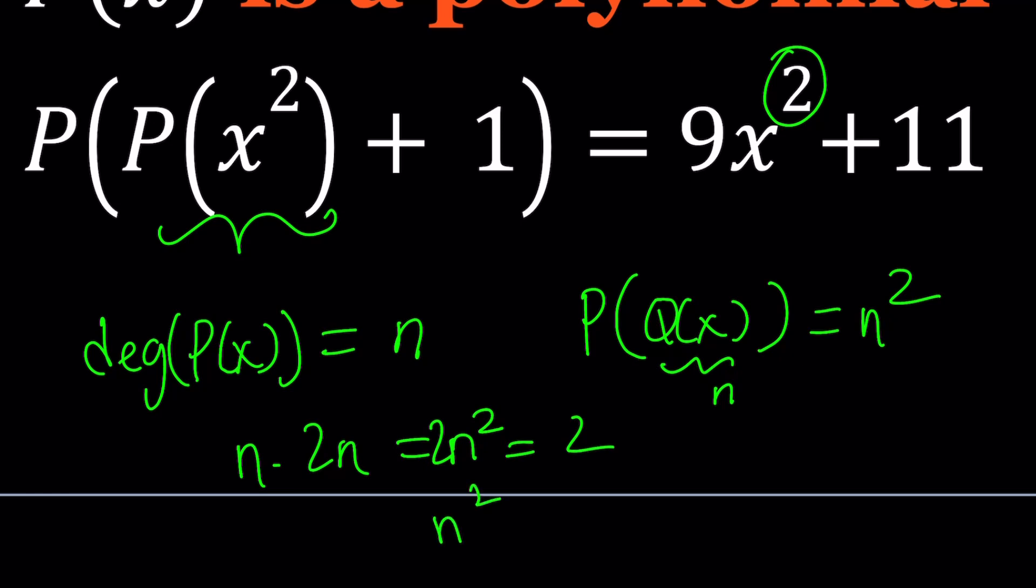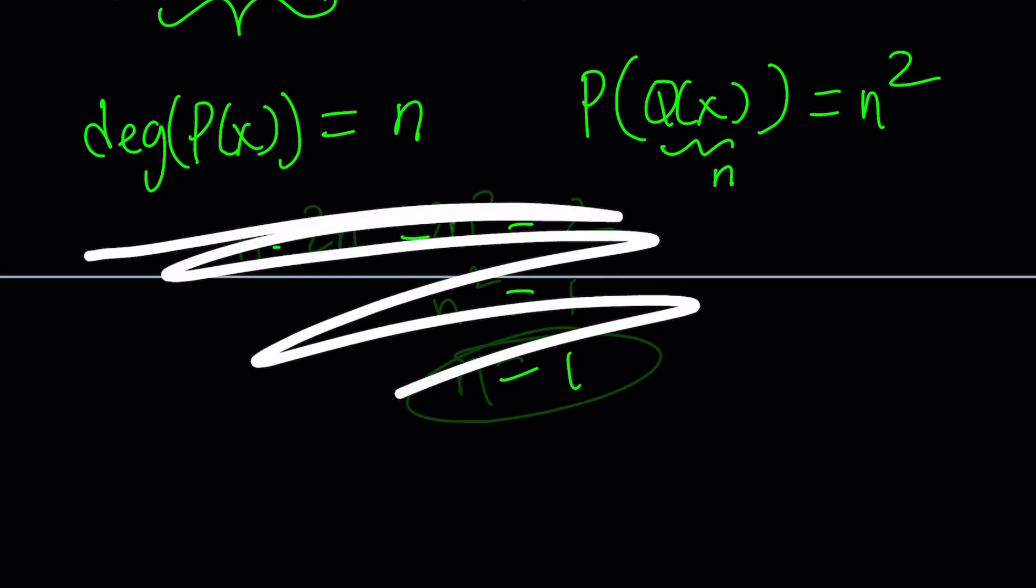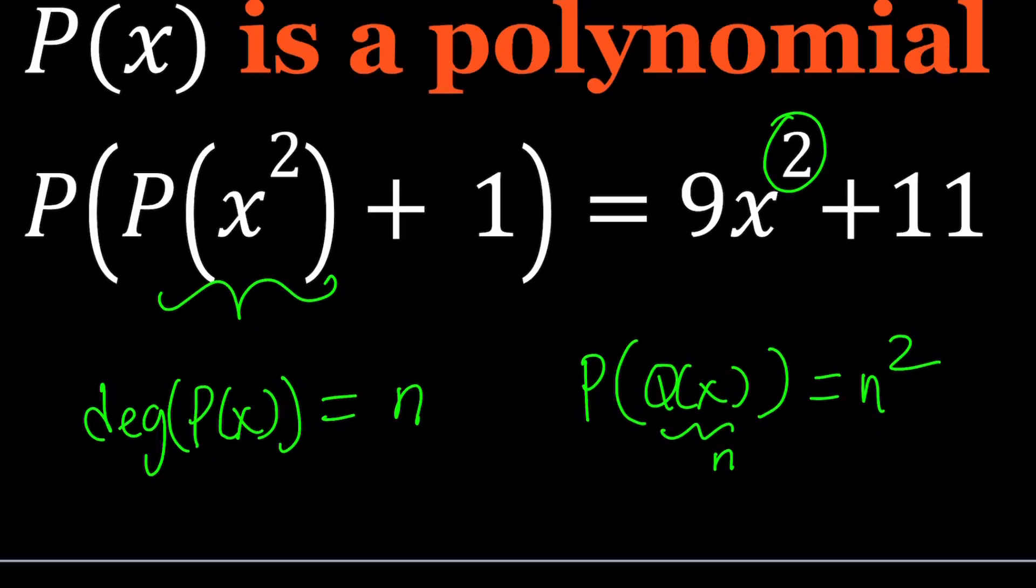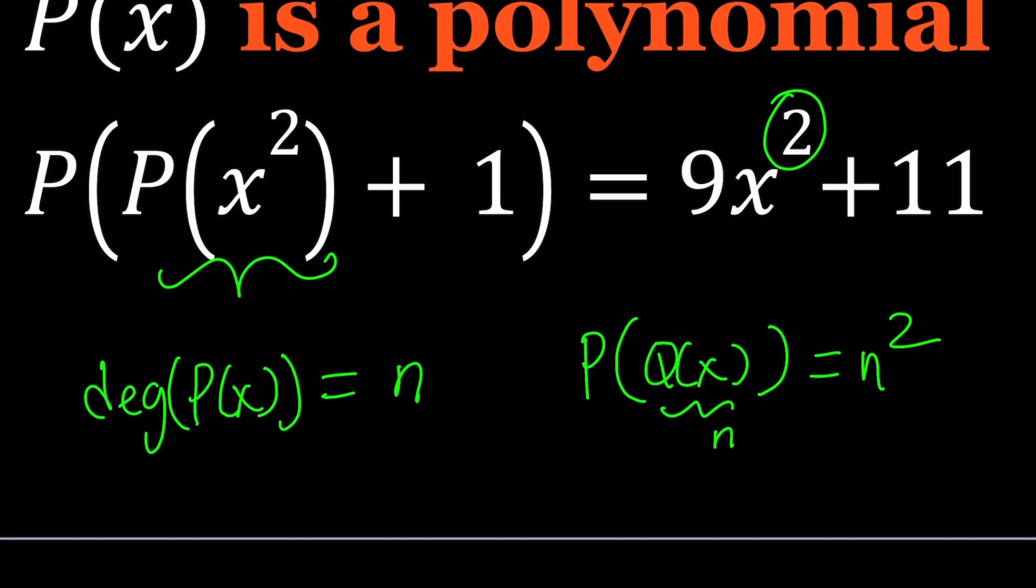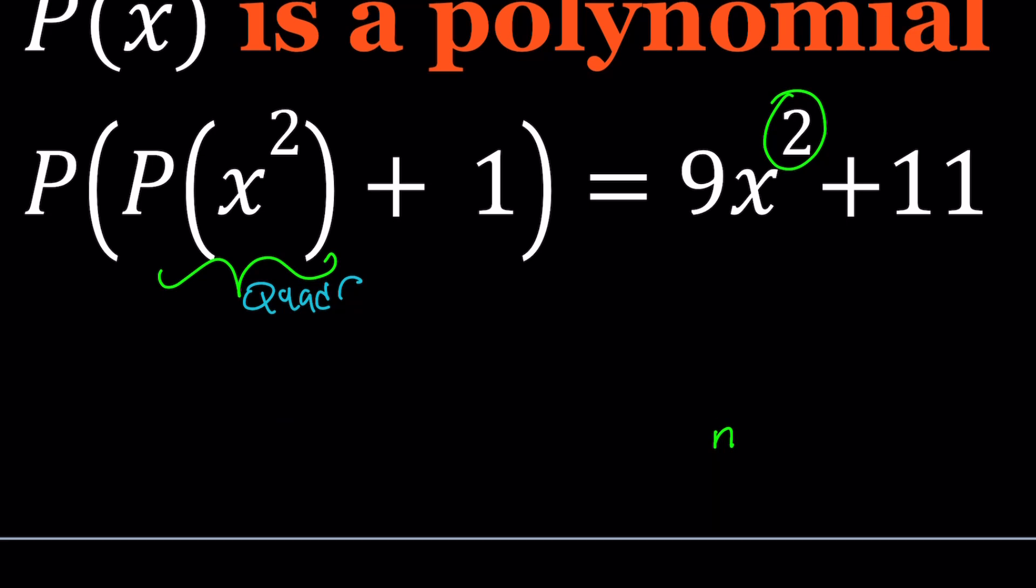So n squared is 1 since degree cannot be negative. n has to be 1. To keep a long story short, I know I kept it too long, P of x must be linear. Think about it. If P of x is a linear polynomial, P of x squared is going to be quadratic. And then P of a quadratic, because P of x is linear, is going to be quadratic. So we decided finally that the degree of P of x is 1.